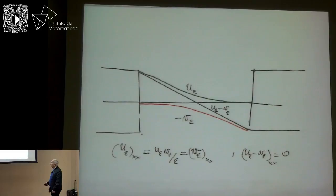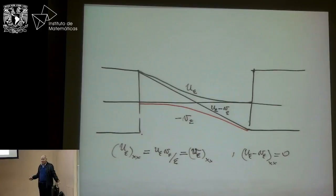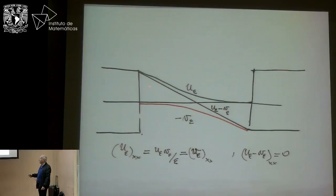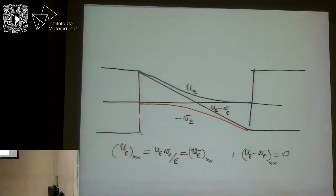For every epsilon, the difference U - V satisfies a linear equation, so it is just a line. The solutions U_epsilon are always positive because the right-hand side becomes negative if you have negative values, which forces the solution to be positive. As epsilon goes to zero, this approximates more and more two lines. So in the limit, U_0 will be positive on one side and zero on the other, and V will be positive on the other side and zero on the first side.